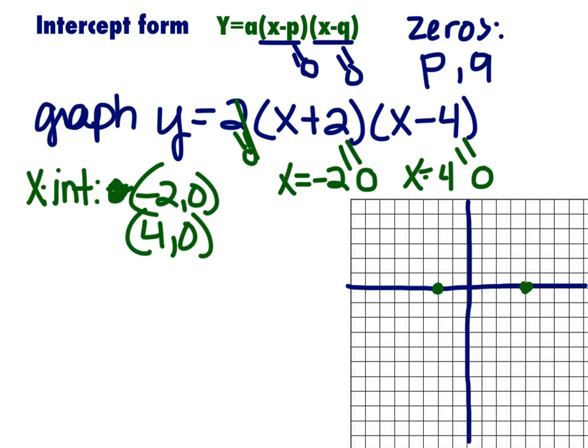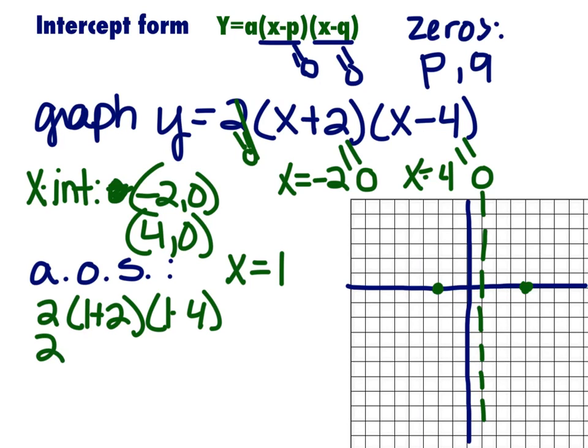Alright, now you can find your axis of symmetry. Axis of symmetry. Because it's always going to be halfway between any two points on your parabola, right? So it's got to be right here. You can use the midpoint formula if you want to, or you can just look and say, halfway between negative 2 and positive 4 is 1. So our axis of symmetry is at x equals 1. That's also going to give you the x-coordinate of your vertex. So you can plug in a 1. We have 2 times 1 plus 2 times 1 minus 4 gives us 2 times 3 times negative 3, which is negative 18. So now we know our vertex is at 1, negative 18.